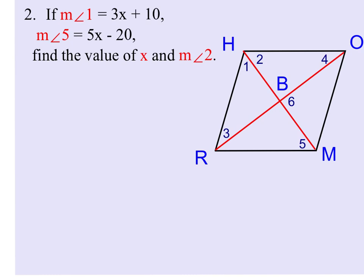Well, because we know that the opposite angles are congruent, and we know that the opposite angles have been bisected, that means that angles 1 and 5 have to be equal. So I'm going to set up an equation: 3x plus 10 has to equal 5x minus 20.